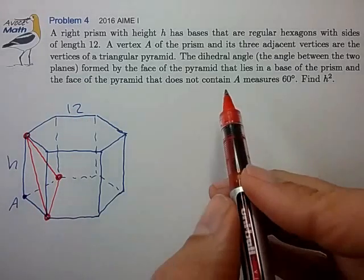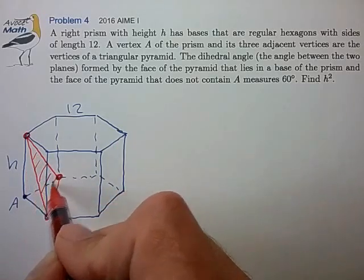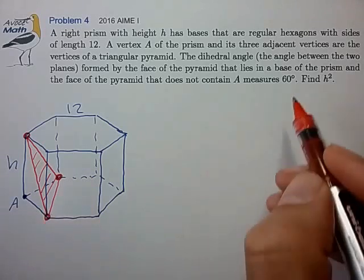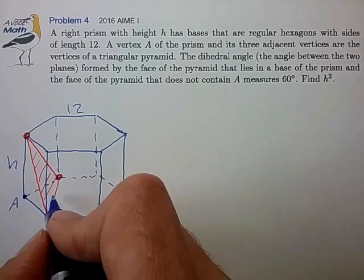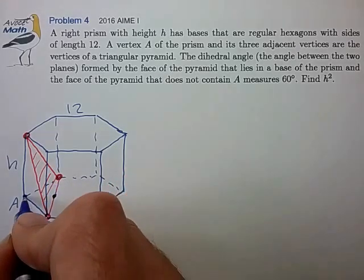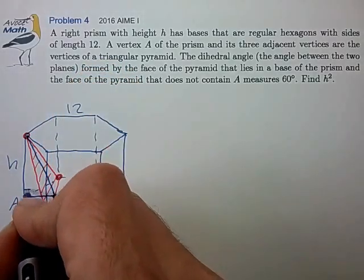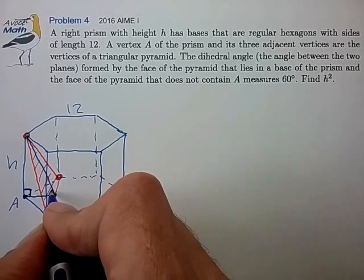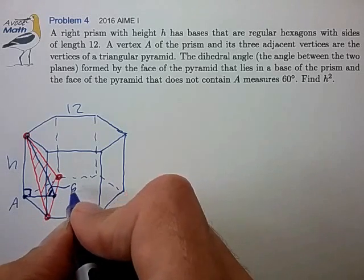And it looks like we have a dihedral angle between this face and the base of the prism is 60 degrees. So it looks like we should draw the cross-section at the midpoint of this line to form this right triangle. And then this angle in here is equivalent to the dihedral angle, and we know that that's 60 degrees.